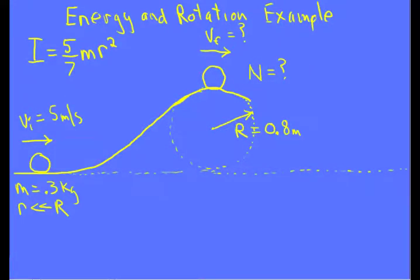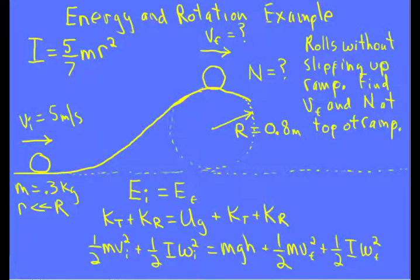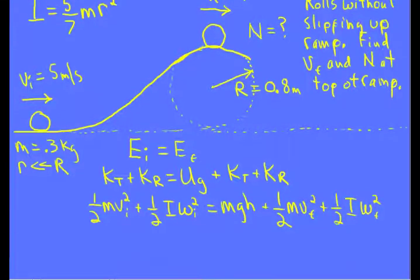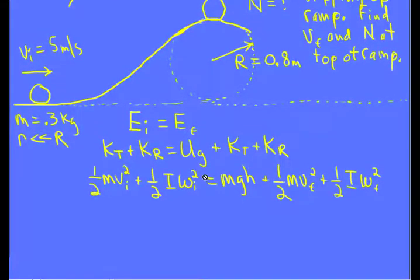So we want to do conservation of energy. It does roll without slipping up the ramp. That means no energy is lost on its way up. And we write the initial energy equals the final. And we have translational kinetic energy and rotational kinetic energy at the bottom. At the top we have gravitational potential and we have both kinds of kinetic, translational and rotational.